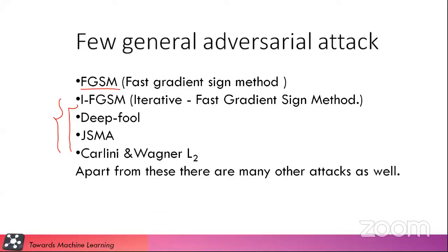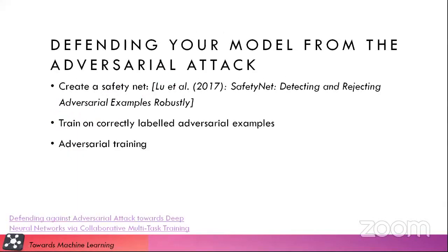Since we have an attack, you have a neural network and you are using it in production, and the attackers are trying to attack your neural network by creating adversarial examples. But how will you defend it? You need some kind of defense. Defense is very important. There can be many ways to defend the model. There's no ultimate way to defend against adversarial attacks, and attackers are basically generating new types of attacks. If you belong to the cybersecurity field, you are quite aware of this.